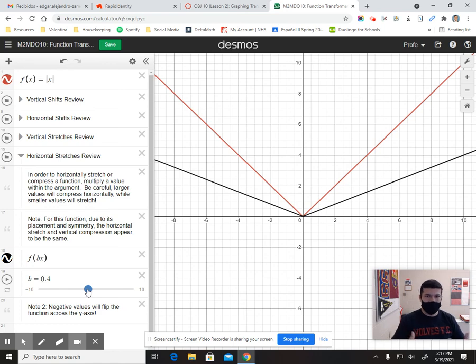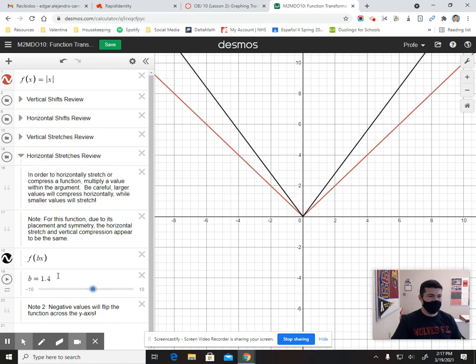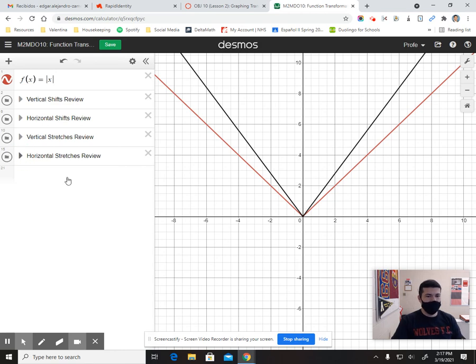So there's kind of a pattern right there. When you add or subtract, multiply or divide values to the argument, it's kind of like, visually speaking, the opposite effect happens. And that's because it's happening within the argument of the function. It's also worth noting that if you have negative values, and this one's not the best example, but negative values are going to flip you across the y-axis. And those are the different types of transformations.